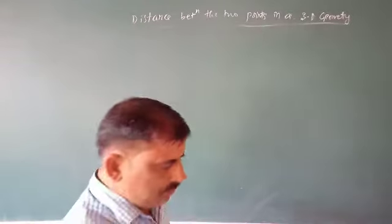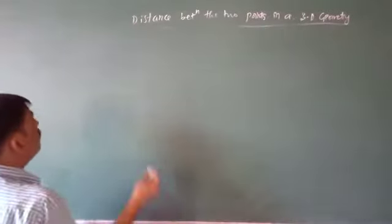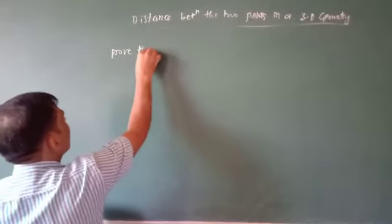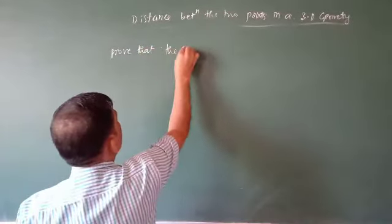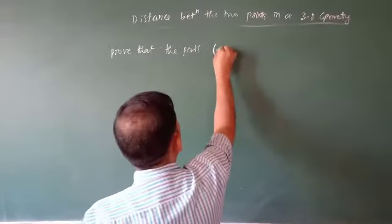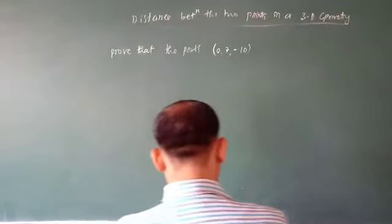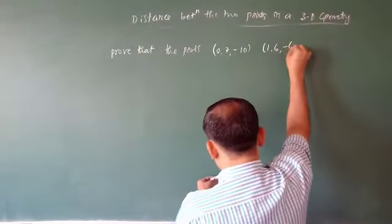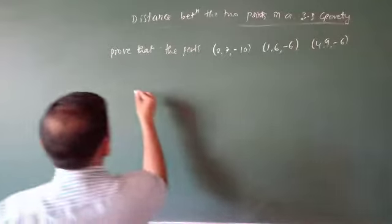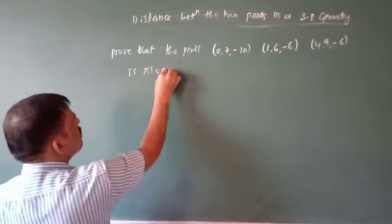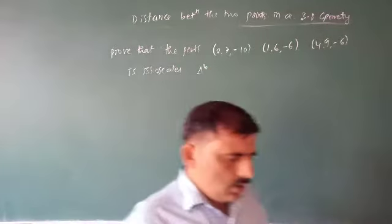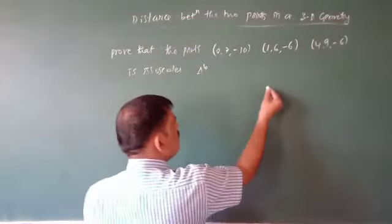Next problem: Prove that the points (0, 7, −10), (1, 4, 6), and (−6, 4, 9) − actually (−6, ...) − form an isosceles triangle. For an isosceles triangle, any two sides must be equal.